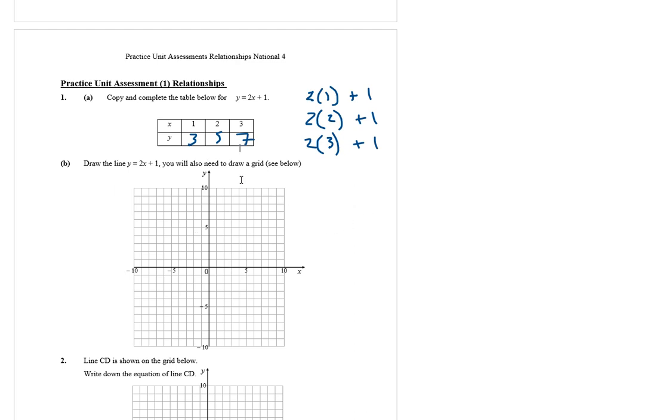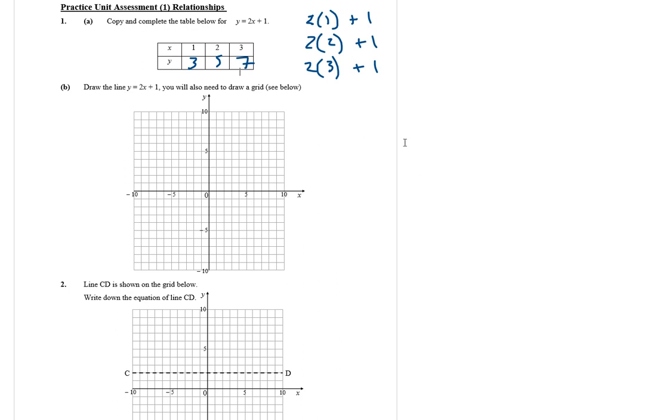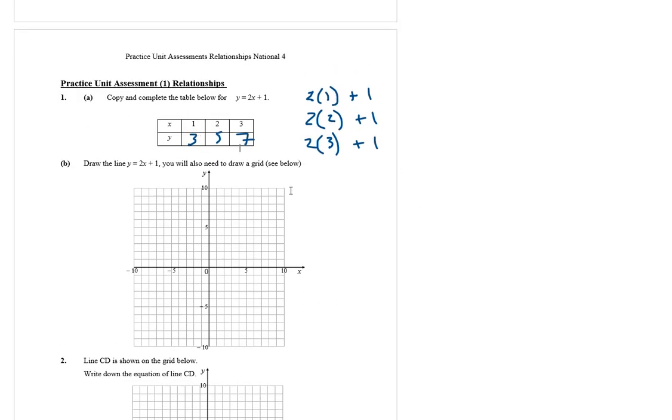Draw the line. You'll also need to draw a grid. What I'm going to do now is plot these points. So here's 1 and 3, here's 2 and 5, and here's 3 and 7. And all I've done there is for the x, I'm going along, and for the y, I'm going up or down. So 1, 3 just means go along 1, go up 3. 2, 5 which means go along 2, go up 5. 3, 7, go along 3, go up 7.